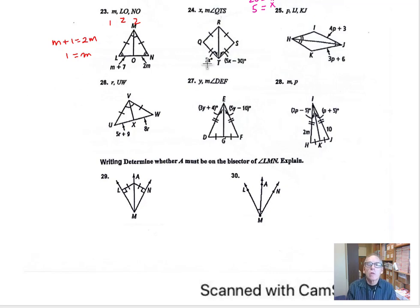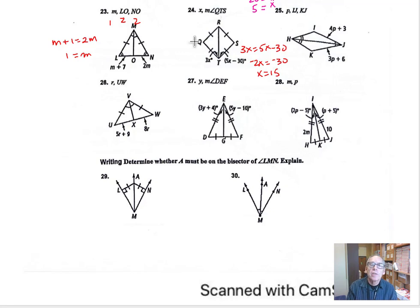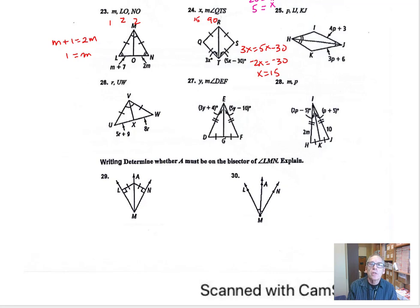Looking at number 24, we have 3x equal to 5x minus 30. Taking 5x away from both sides gives minus 2x equals minus 30, so dividing by minus 2 gives x equals 15. The measure of angle QTS is twice 3 times 15 — that's twice 45 — which is 90 degrees, so angle QTS is 90.